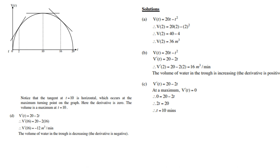Then, the second question B. V(t) is 20t minus t squared. So, you find the first derivative, which is then 20 minus 2t, and then replace t with a 2, and you get 16 cubic meters per minute. The volume of water in the trough is increasing. So, the derivative is positive.